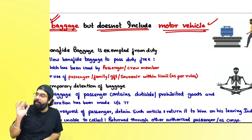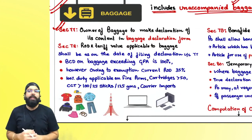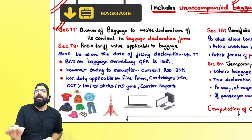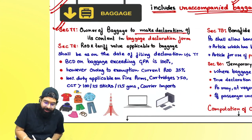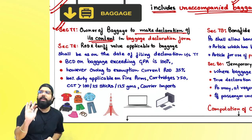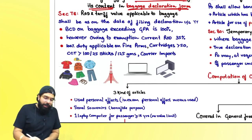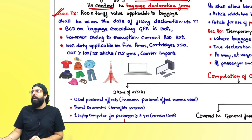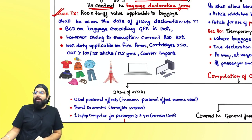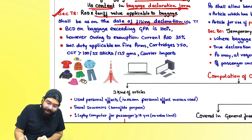Motor vehicles can't be cleared as baggage. Section 77 says that the owner of the baggage has to make a declaration of the contents — when you are coming from outside India, what things you are bringing — and that declaration form is known as the baggage declaration form. Section 78 says the rate of duty and tariff value applicable to baggage is determined on the date of filing the baggage declaration form under section 77.